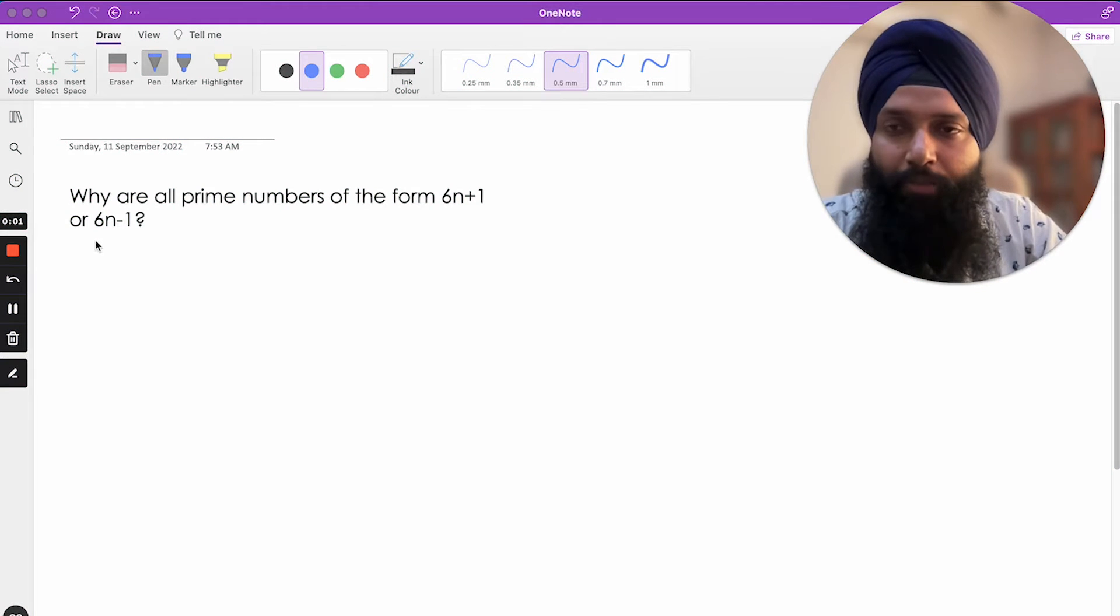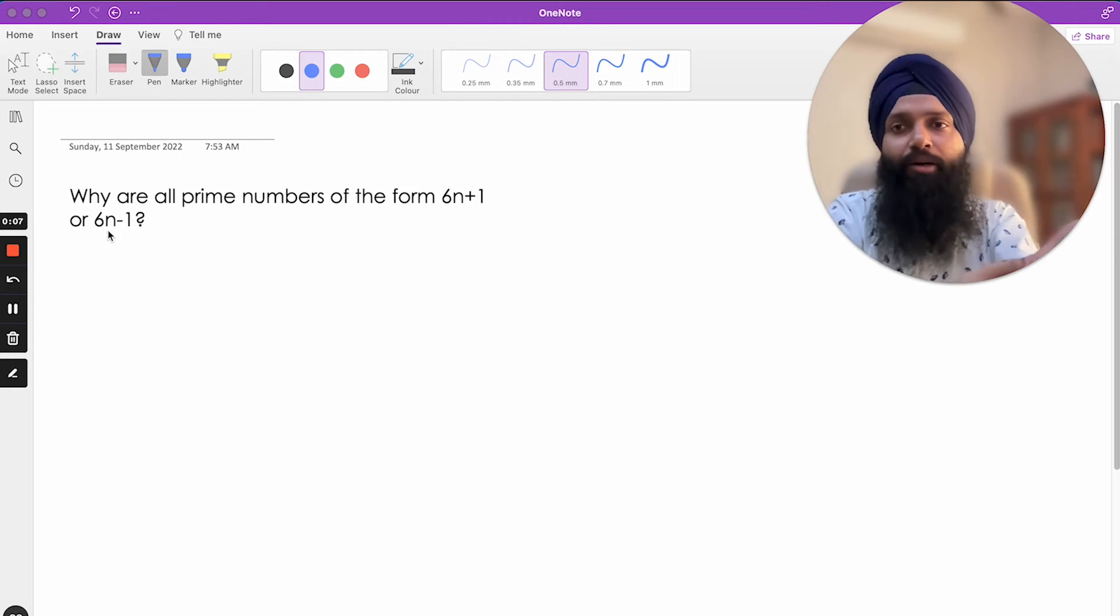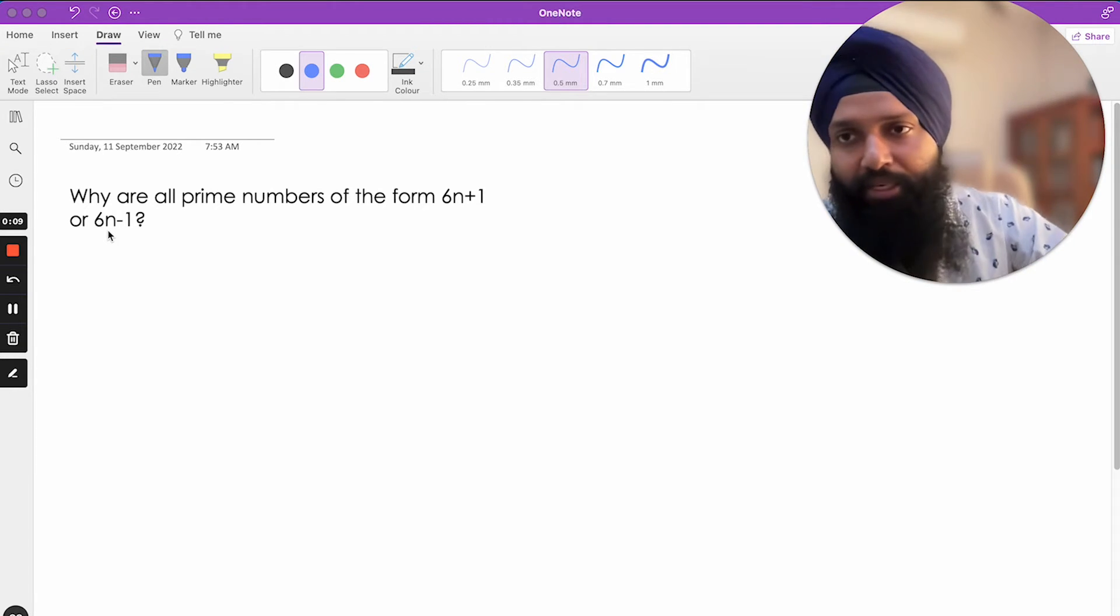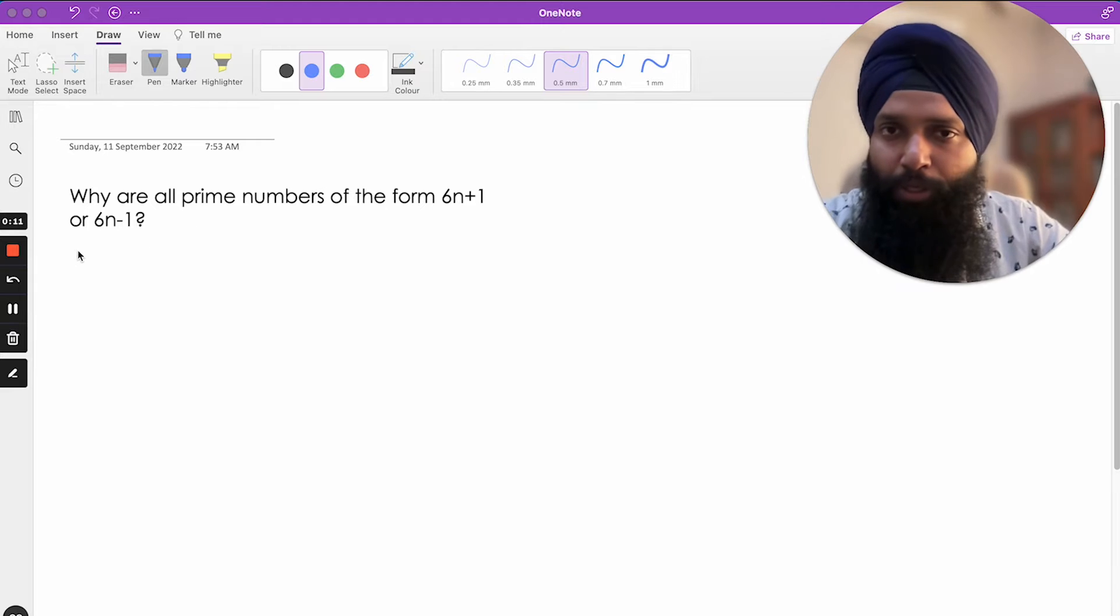In this video I am going to talk about why prime numbers, all prime numbers, are of the form 6n plus 1 or 6n minus 1, where n is an integer. So let's try to understand.